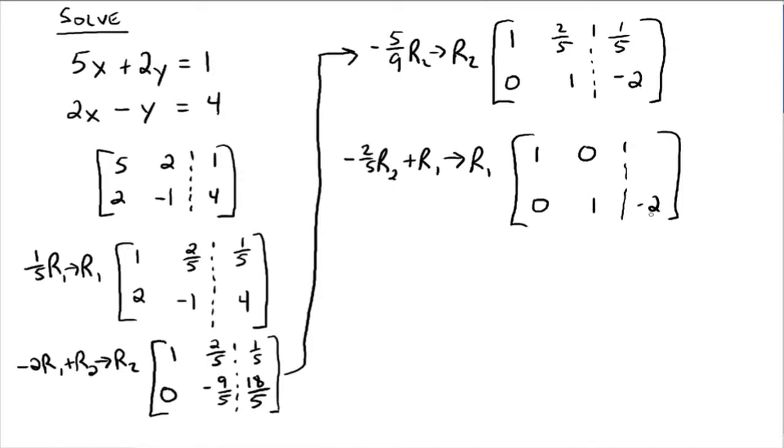Negative 2 fifths times negative 2 would be positive 4 fifths. Plus 1 fifth would be 5 fifths, which is 1. And then we can say, all right, x equals 1, y equals negative 2. Or, as an ordered pair, 1, negative 2.